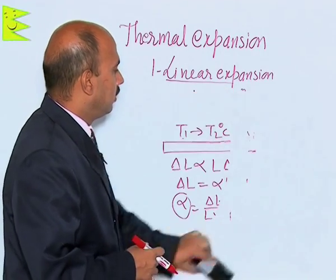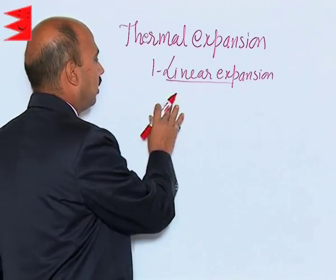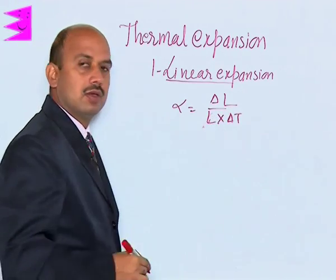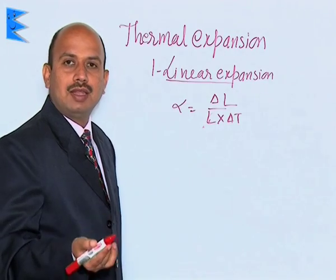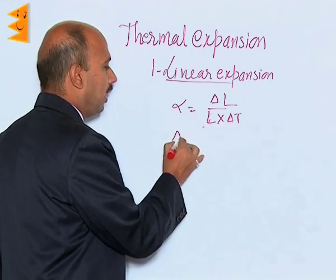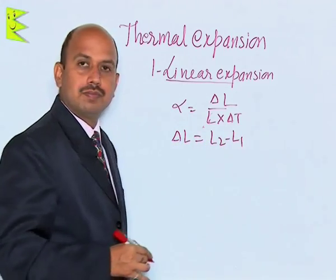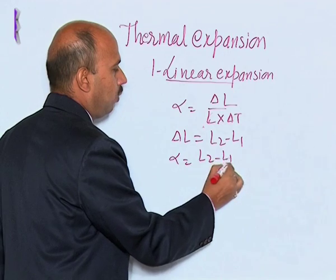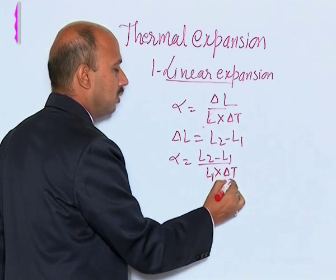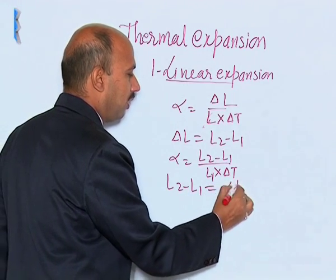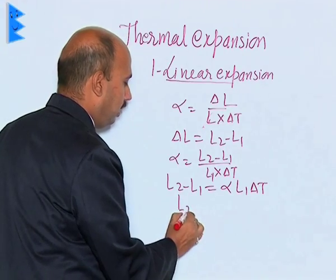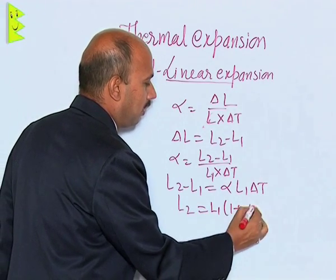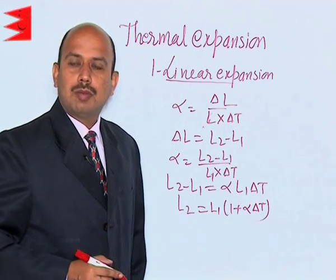This can also be written as: if L1 is the initial length and L2 is the final length at temperature T2 degrees Celsius, then alpha equals (L2 minus L1) divided by L1 times the change in temperature. Rearranging, L2 minus L1 equals alpha times L1 times delta T, and the final length L2 at T2 degrees Celsius can be written as L1 times (1 plus alpha times delta T). So this is about linear expansion.